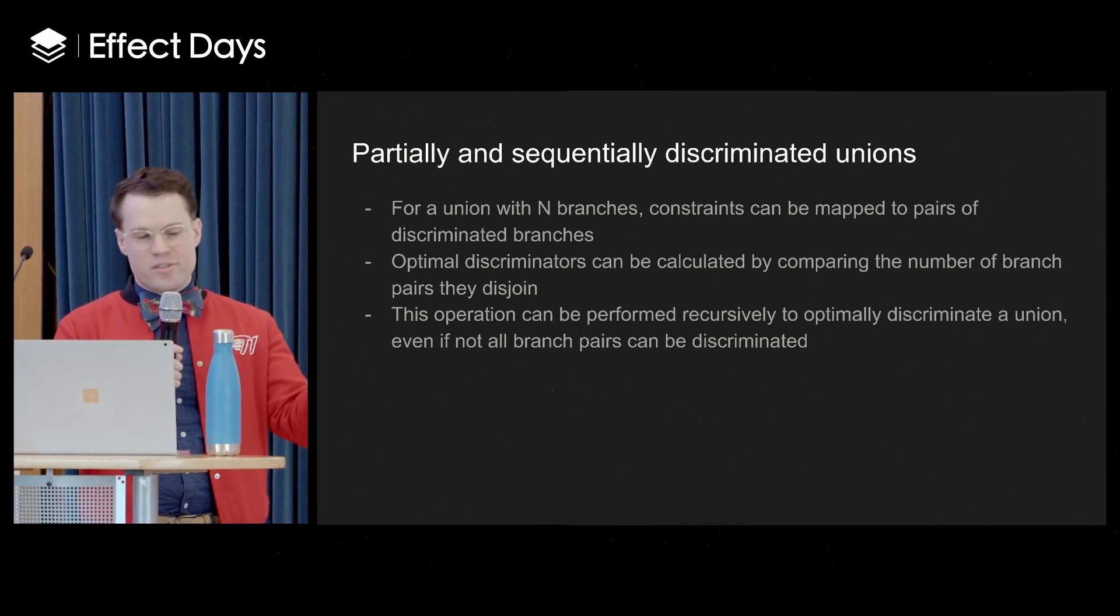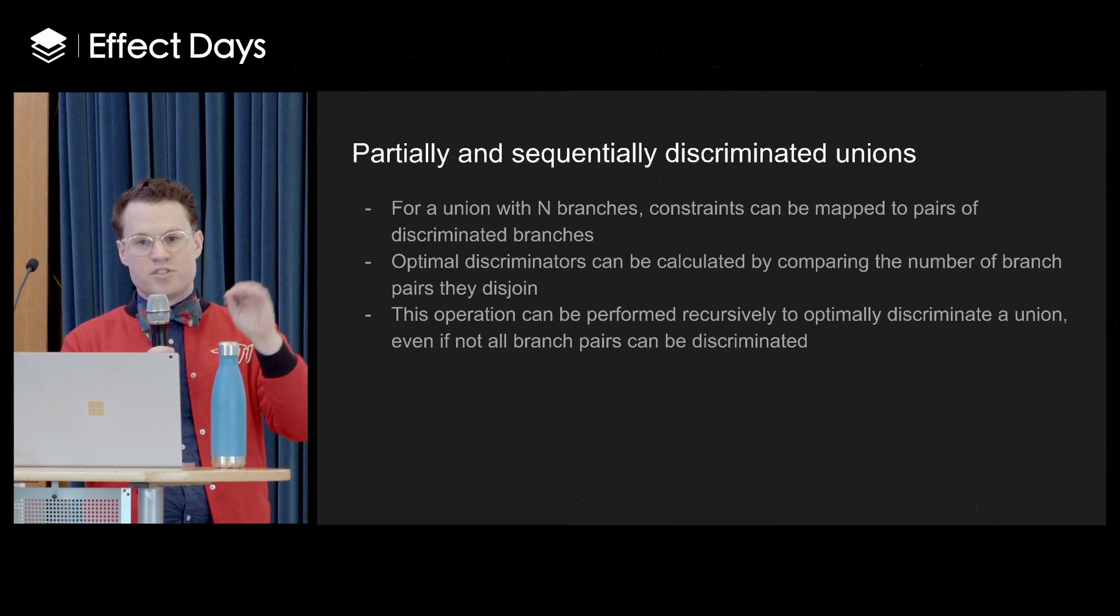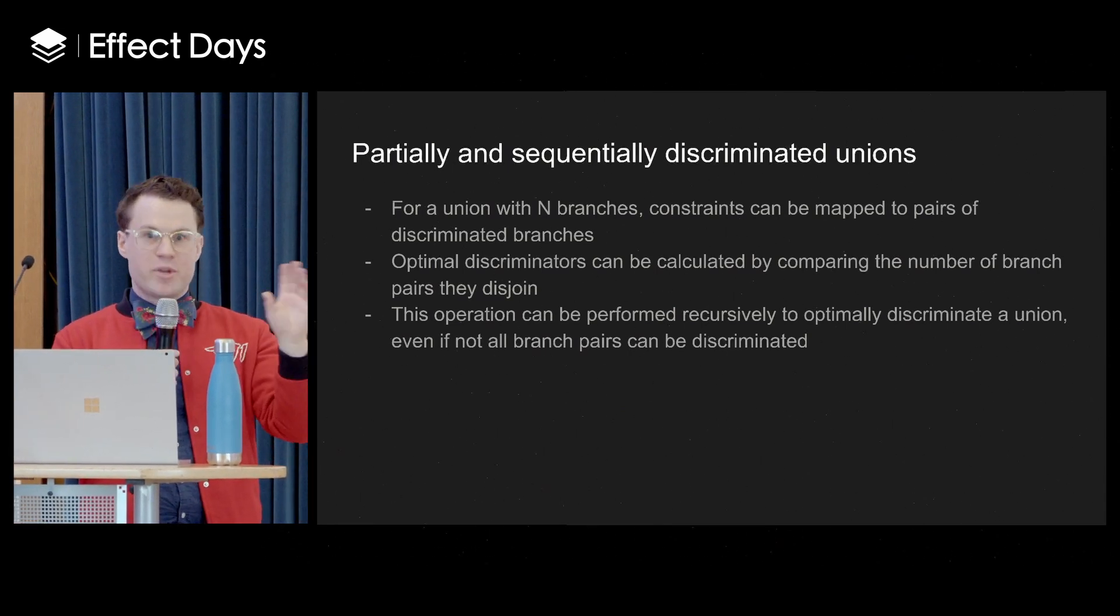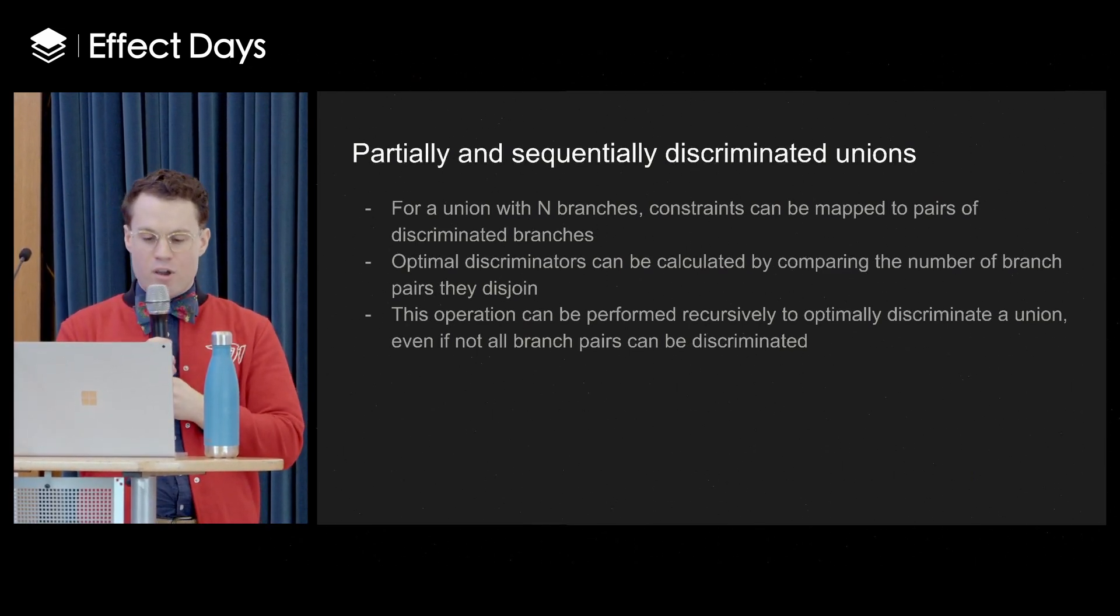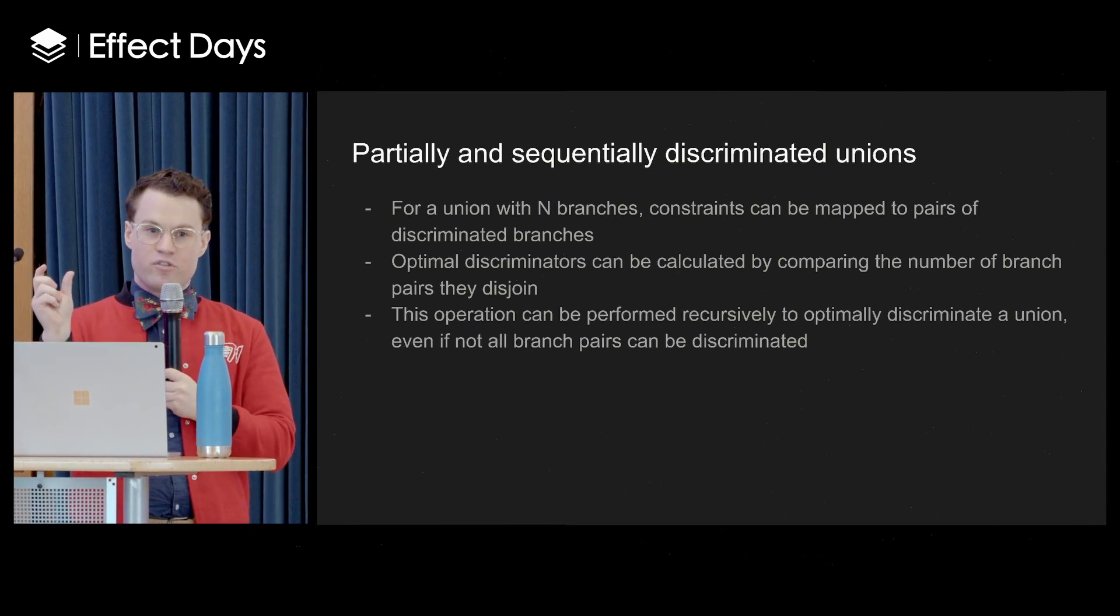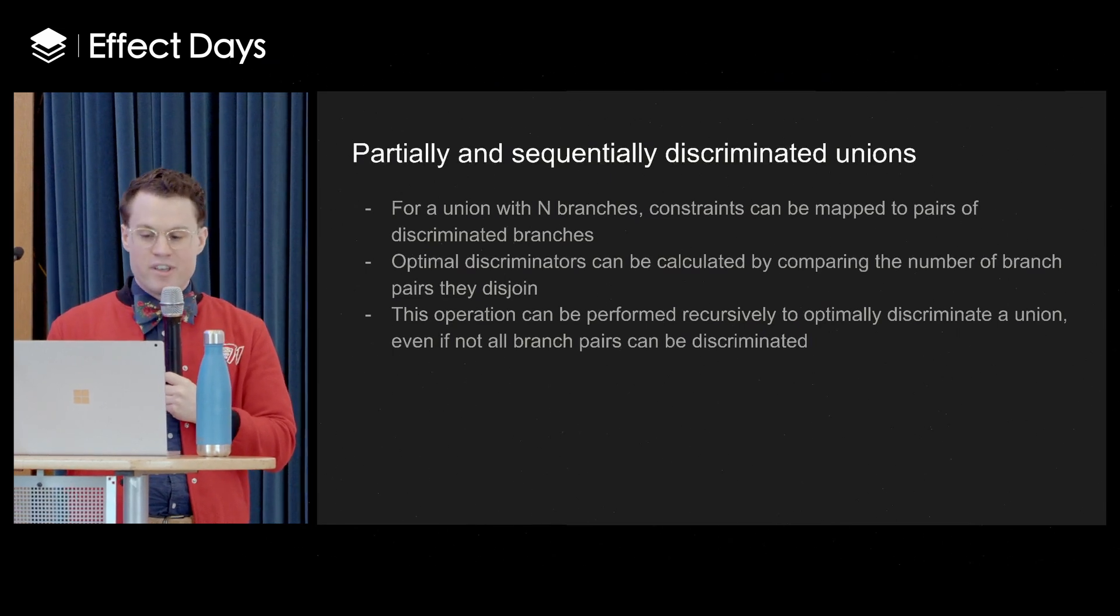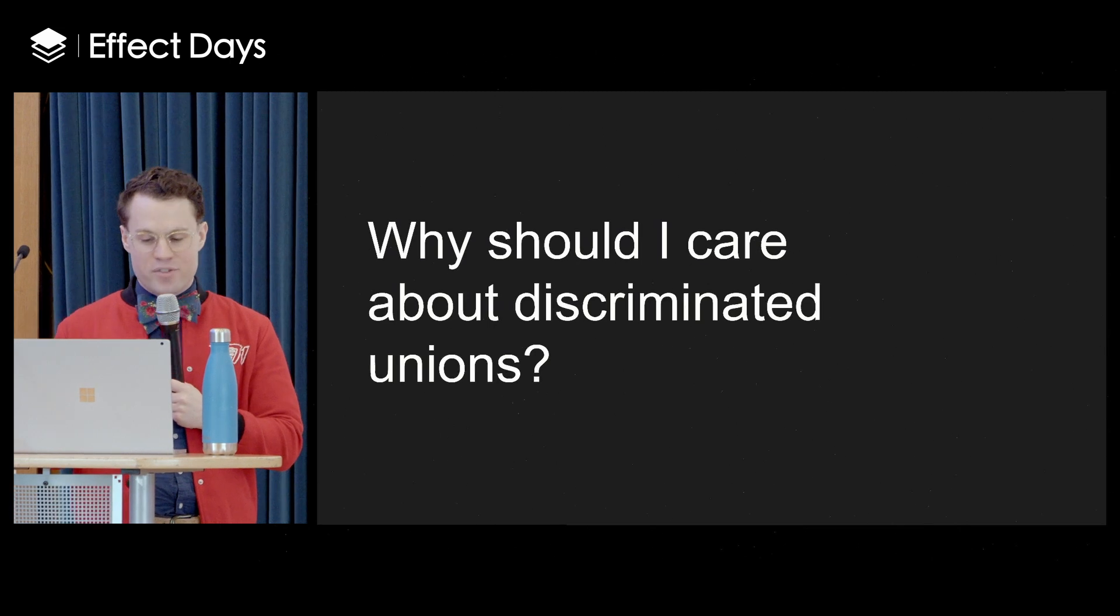What it really means to discriminate two branches of a union is to know exactly which branch you're on by making a single check. And that means that there can be no values that those two branches have in common. So when you look at something like number less than one and number greater than two, it's actually a very intuitive way to have a range that has no overlap. But people would not think of that as a way to discriminate a union. You could actually use something like this quite easily to check and say, well, is it a number that's less than one? And then all of a sudden, you know exactly which branch you're on and you skip lots of unnecessary work. So you can do this partially and sequentially.